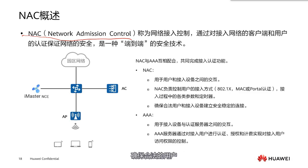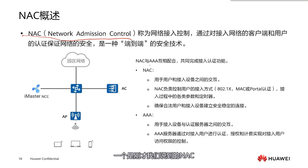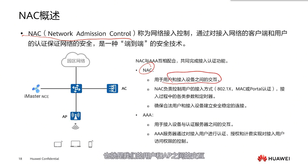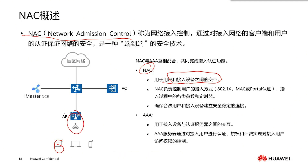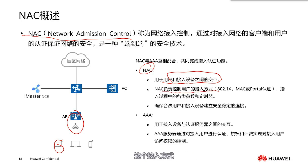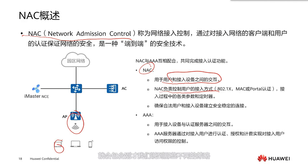Here we involve two systems. One is NAC, used for interaction between users and access devices — that is, the interaction between users and APs, access points. We need to control the access methods, which includes the different strategies we talked about, and then ensure that our users can access the network properly.